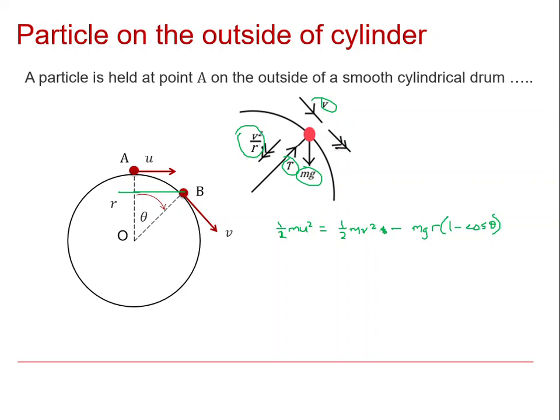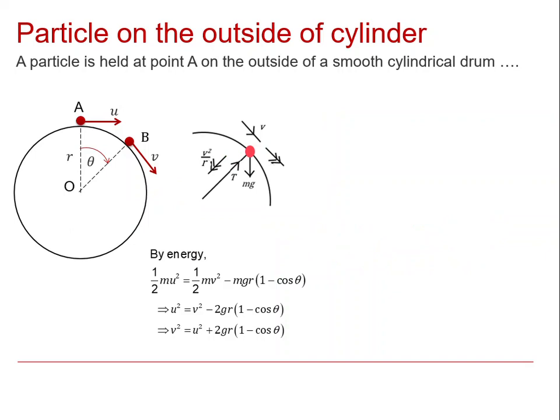Now we want to use that to get v squared so that we can use the resolution equation. If I divide by half m and rearrange, I'll end up saying that v squared equals - essentially moving the final term onto the same side as the u squared. So it becomes v squared is u squared plus 2gr times 1 minus cos θ. That's our expression from energy for v in terms of u, so we'll use that in a resolution equation.